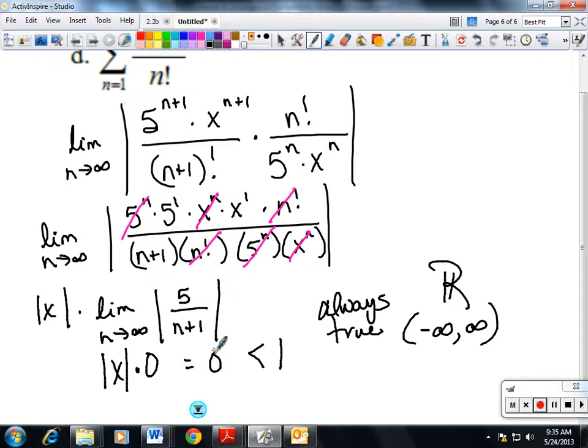And say you had ended up with an answer that was 2 with no x, 2 would never be less than 1, so it would be never true. So it would only converge at whatever point it's referring to. Alright, that's it for interval of convergence.